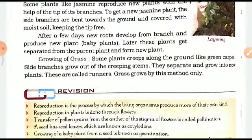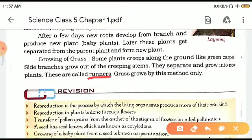Now, growing of grass. Some plants creep along the ground like a green carpet — side branches grow out of the creeping stem, they separate and grow into new plants. These plants are called runners. Such plants grow along the surface of the ground, and wherever the stem touches the soil, roots begin to develop from the stem. We separate them and they become new plants. An example is grass.